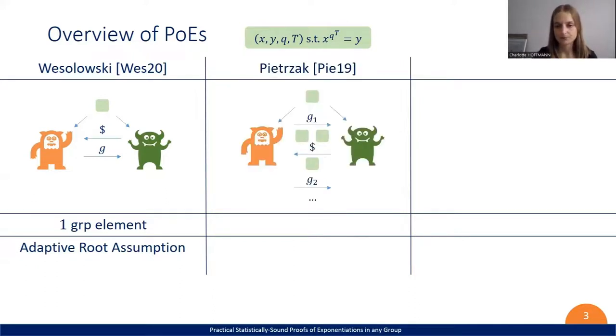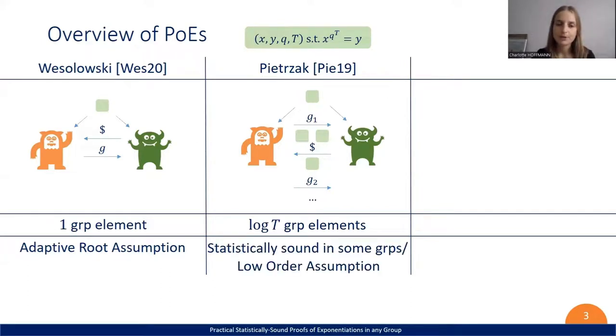Then there's Pietrzak's protocol. Here, the proofs are a bit longer. The proof size is log t. However, this PoE is statistically sound in some groups, and in other groups, it's computationally sound if the low order assumption holds.